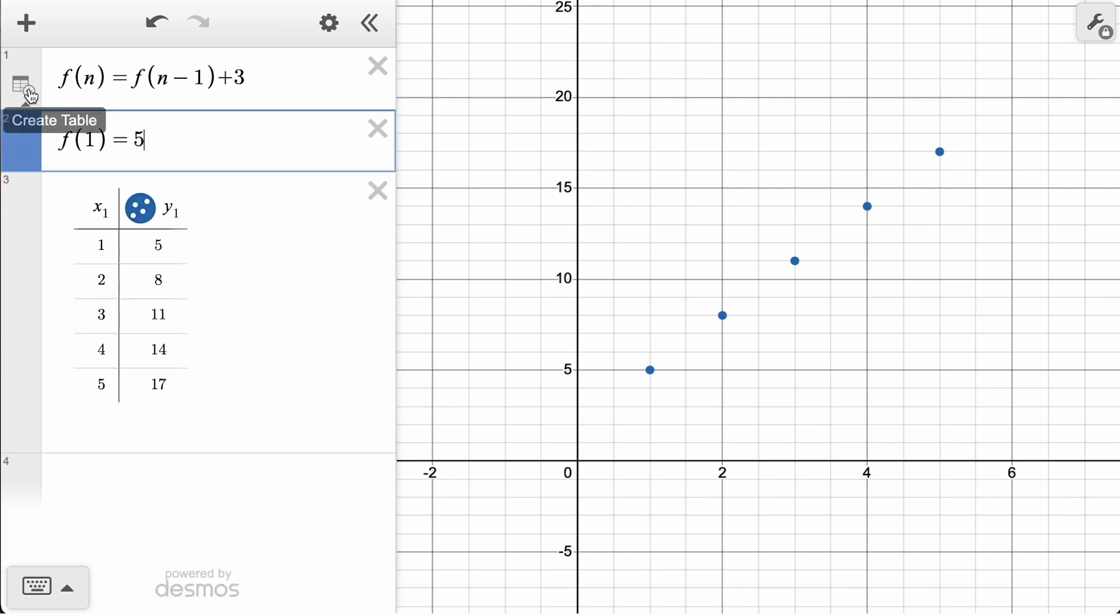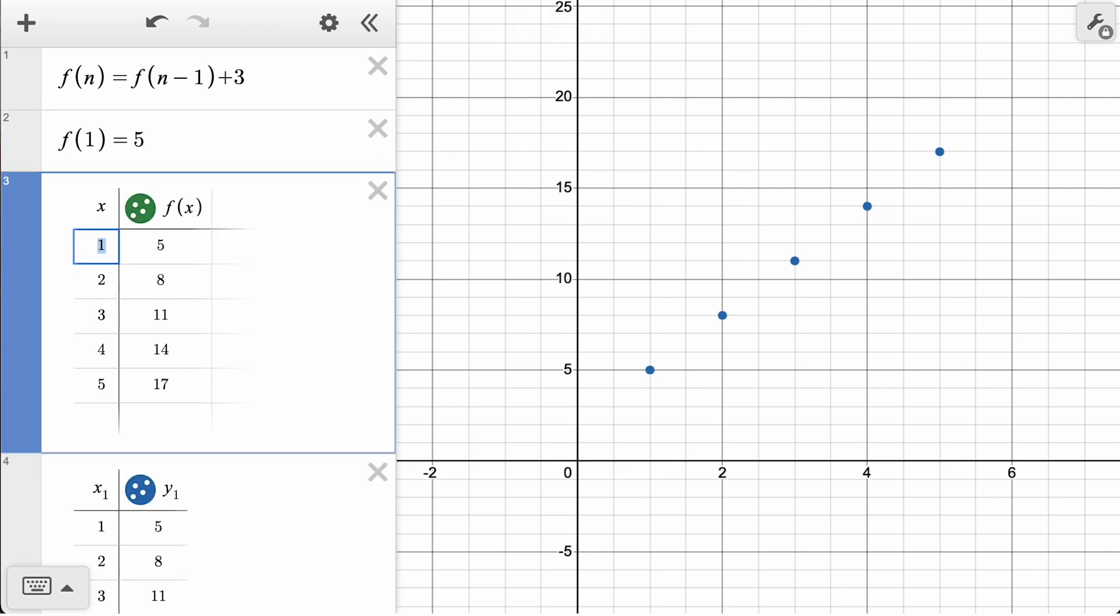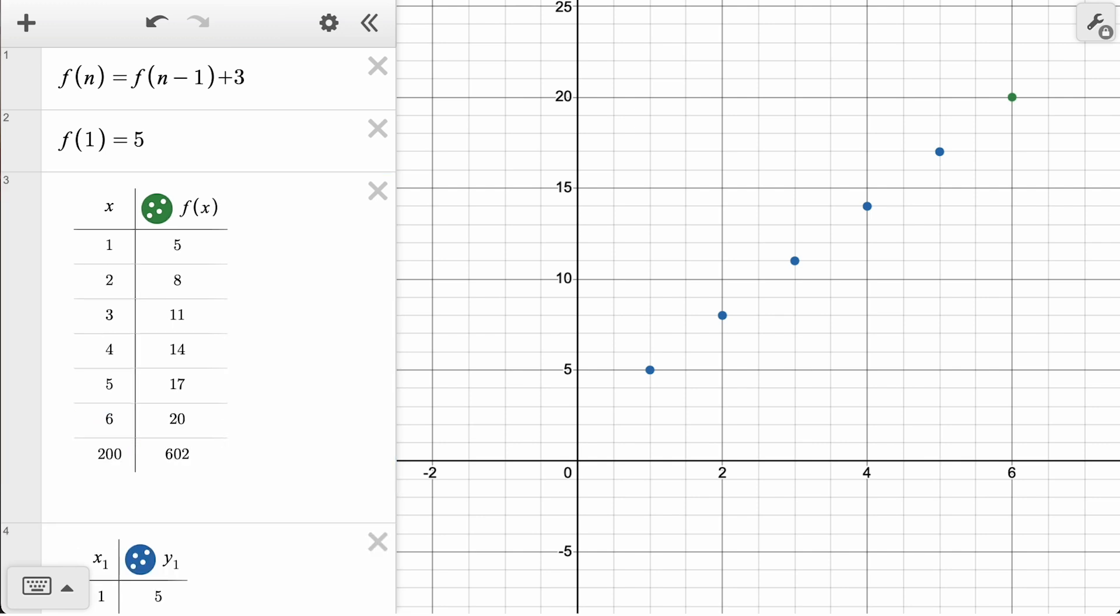By pressing the Create Table icon that appears to the left of our expression, we see a table that is automatically populated with the first five terms. We can hit Enter from the bottom row to see the next term, or calculate any future term by entering a term number in the first column.